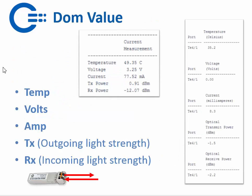What is DOM? DOM is an extra feature which can be used — it's not essential for the communication, but it's an extra feature on a transceiver. It can display the temperature of the transceiver, the volts and amps used by the transceiver, and the laser output and laser input: how much light is sent by the SFP or XFP, and how much light is incoming on the RX.